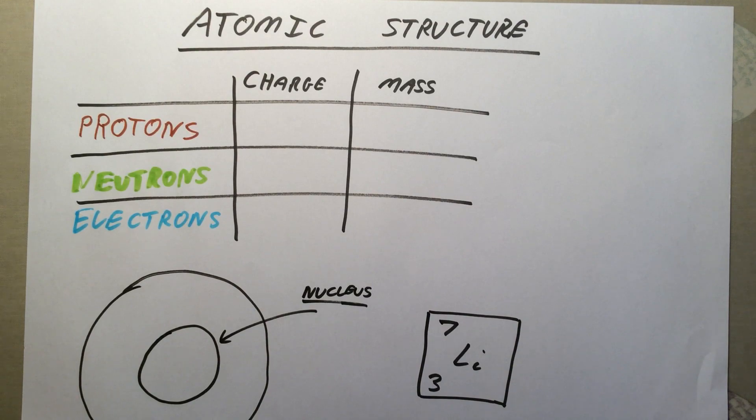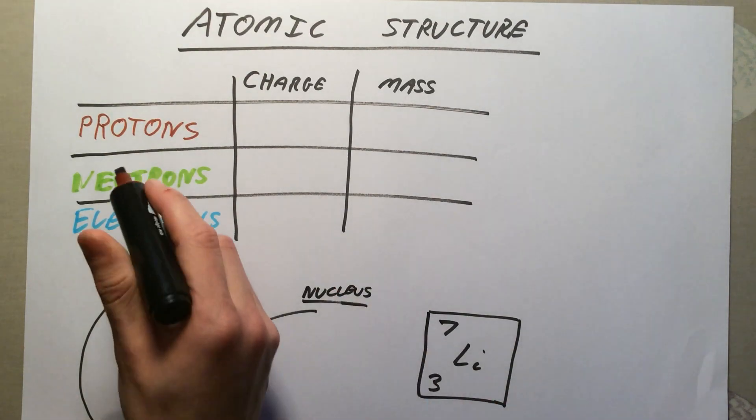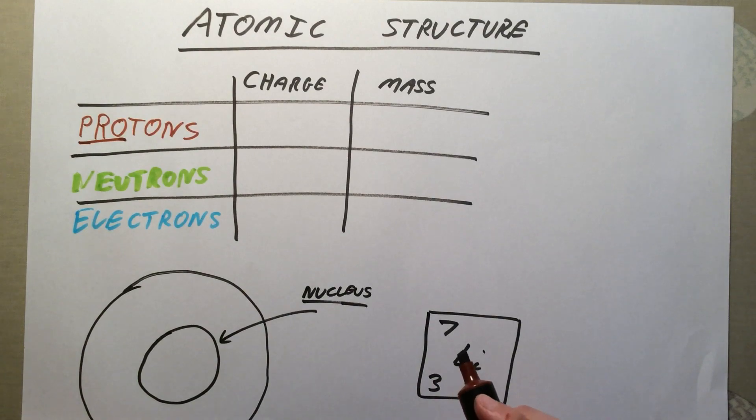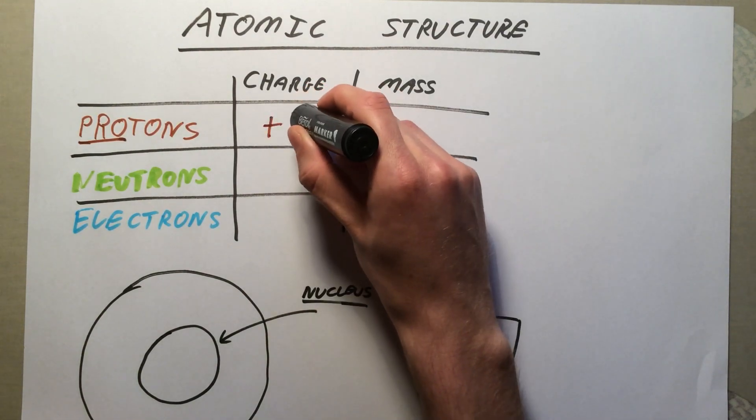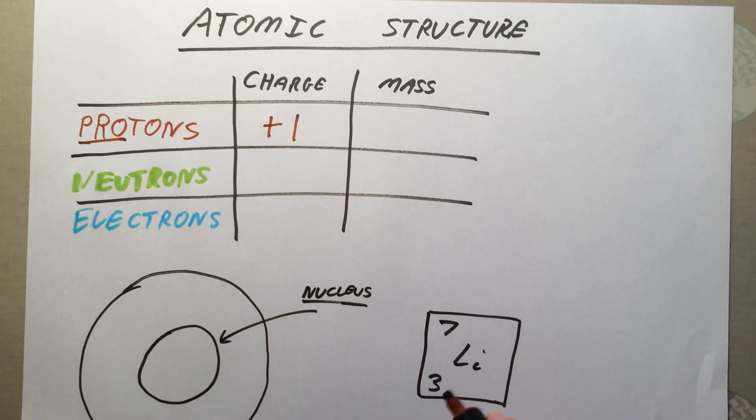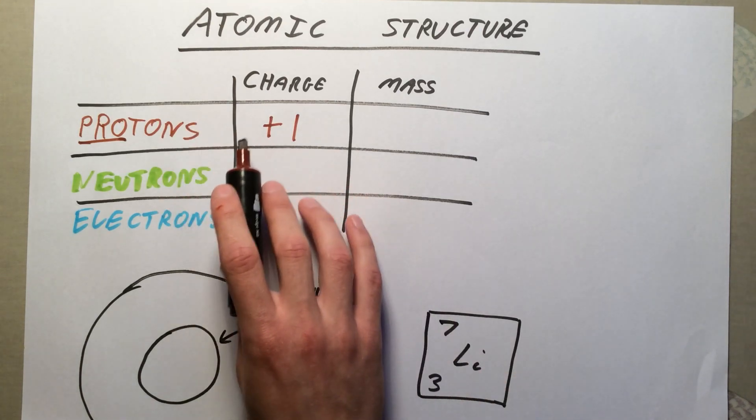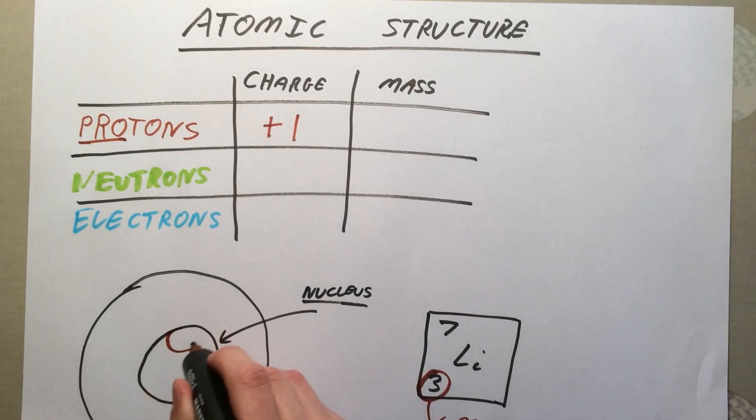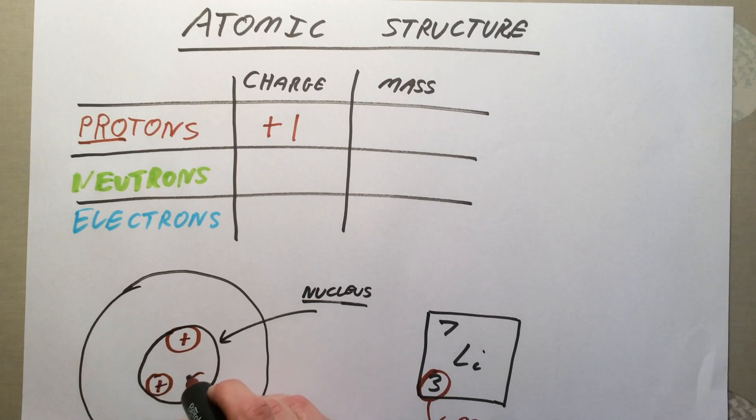The first subatomic particle we find in there are our protons. What you need to think about here is this part 'pro' - if you are pro something, you are very for it, you feel quite positive about it. Protons have a charge of positive one. Every proton in our atom contributes plus one to the charge of the atom. The way we work out how many we've got is by looking at the atomic or proton number of our atom. So in an atom of lithium, I have got three protons, three positive charges, which is why I put a plus inside them.